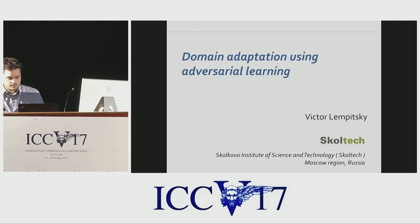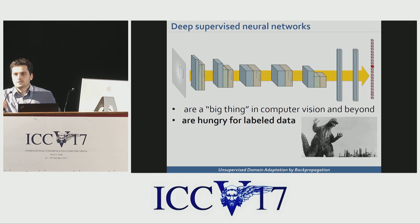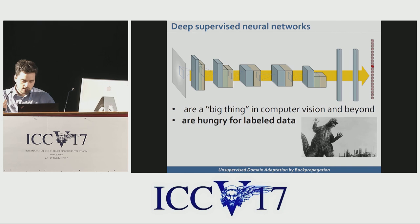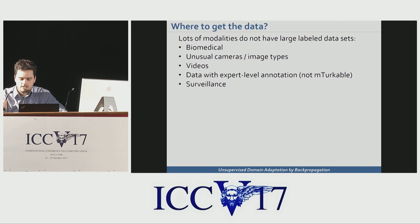Deep networks work really well, and to get best results from them one needs lots of annotated data. It was not until the creation of the big annotated ImageNet that the current deep learning craze started. There are some domains like images of cats and dogs where mining lots of data from the internet is easy, but there are many other domains where it's not — including biomedical images and modalities where annotation is challenging, especially for non-experts.